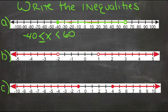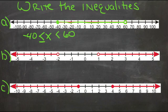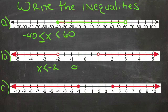In the second example, X can be smaller than negative 2, although it can't be negative 2, and there's no lower limit — it can keep going smaller. Or X can be bigger than 1, so X is greater than 1.